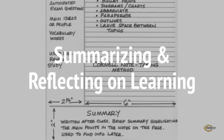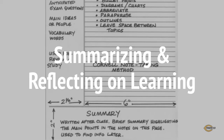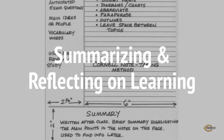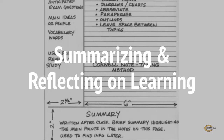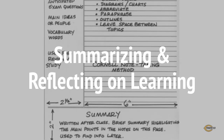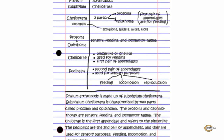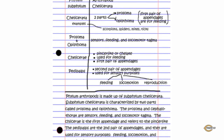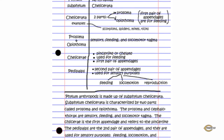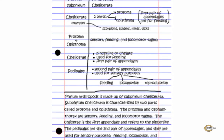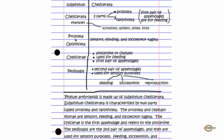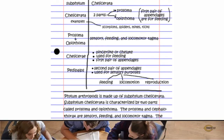The fourth step of the focused note-taking process is to summarize and reflect on learning. In this step, students are asked to think about their notes as a whole and pull together the most important aspects of the information. Students craft a summary that captures the meaning and importance of the content and reflects on how the learning helps them meet the note-taking objective.